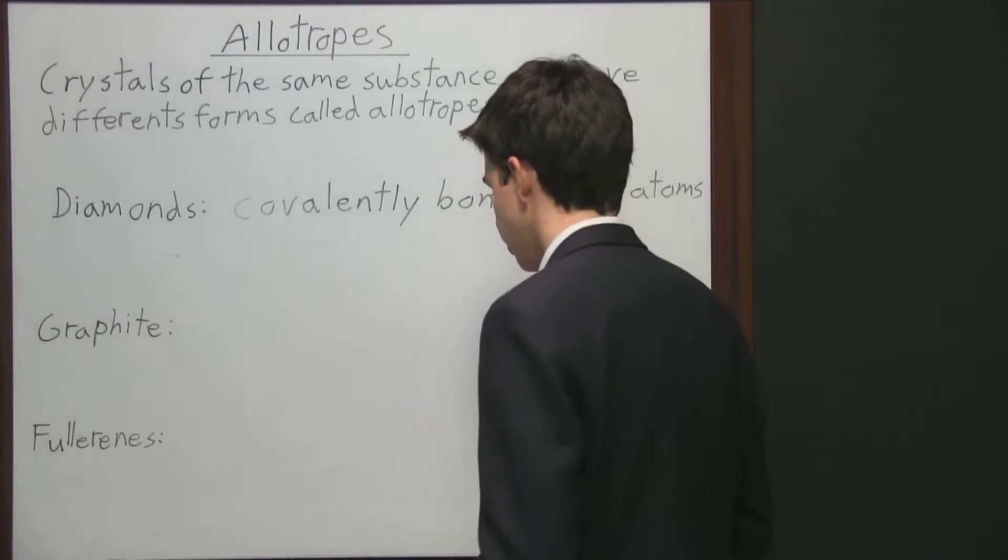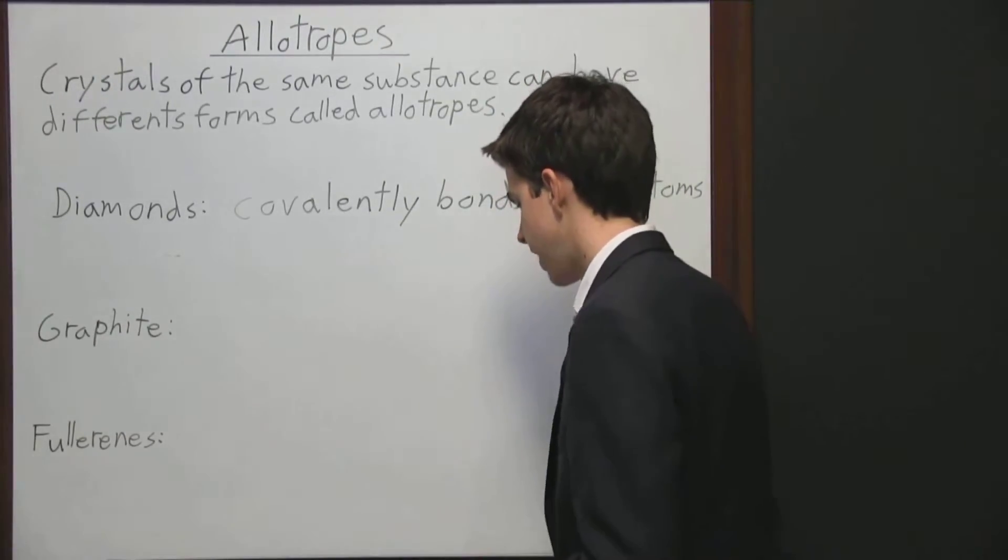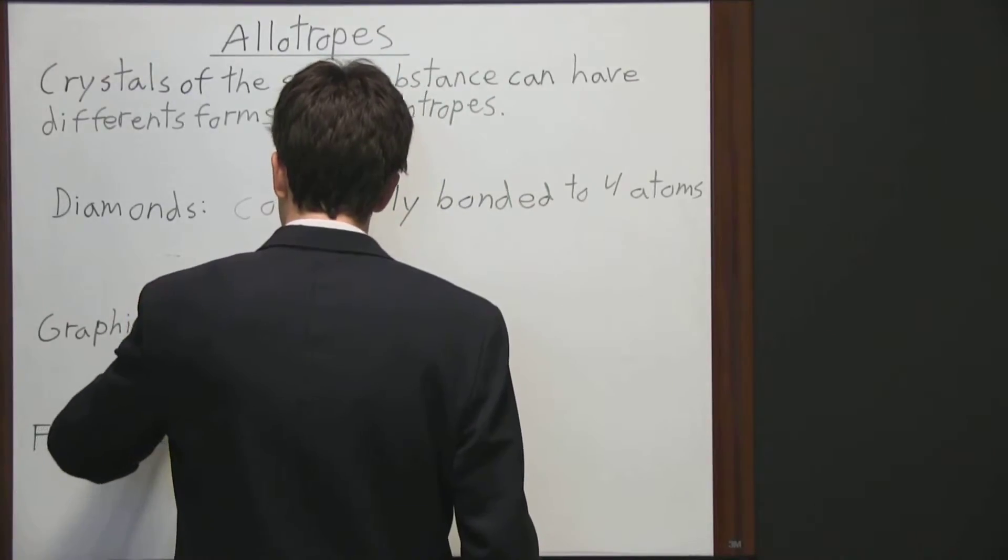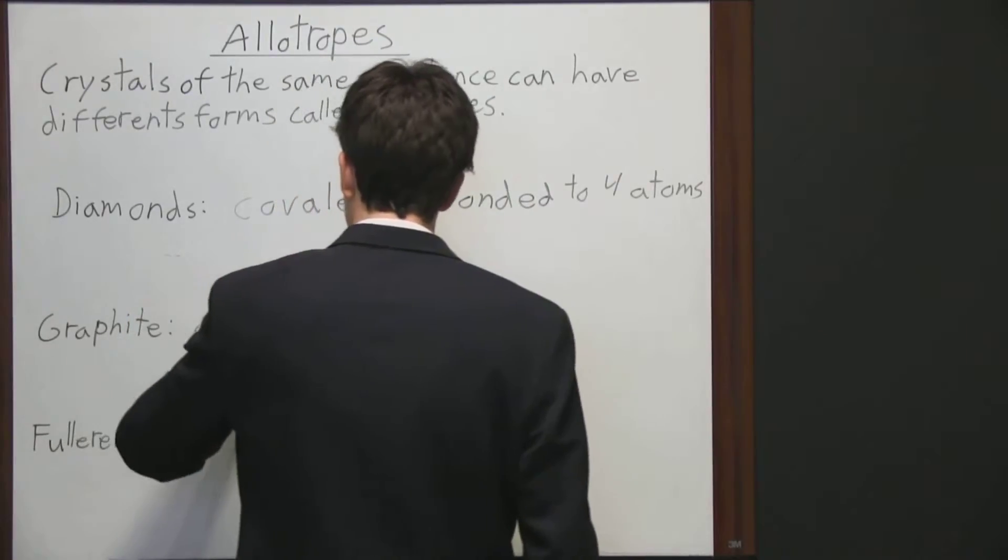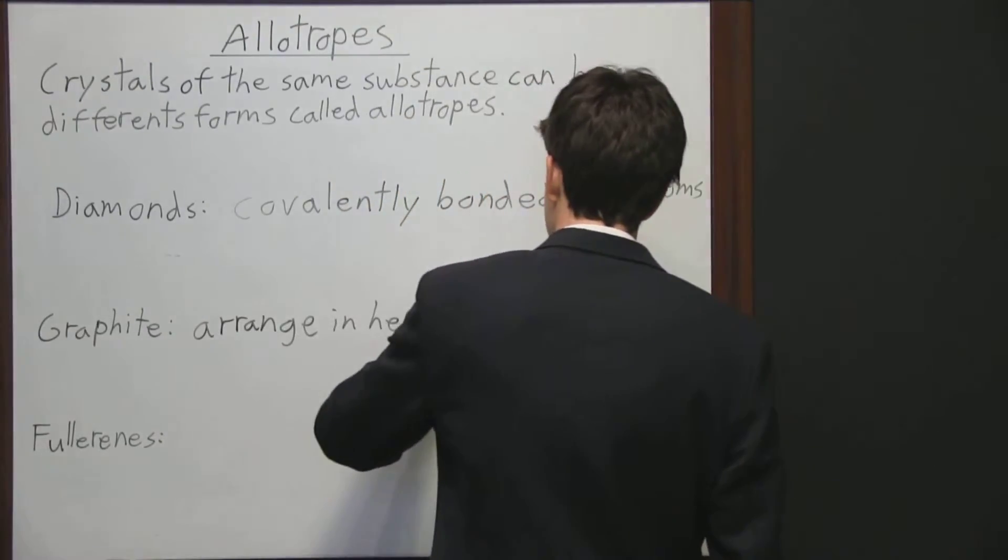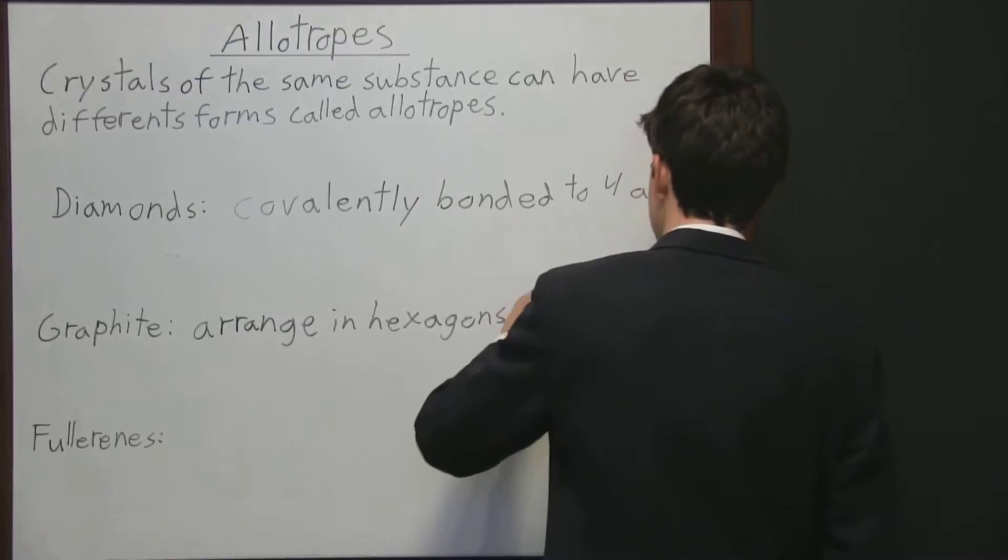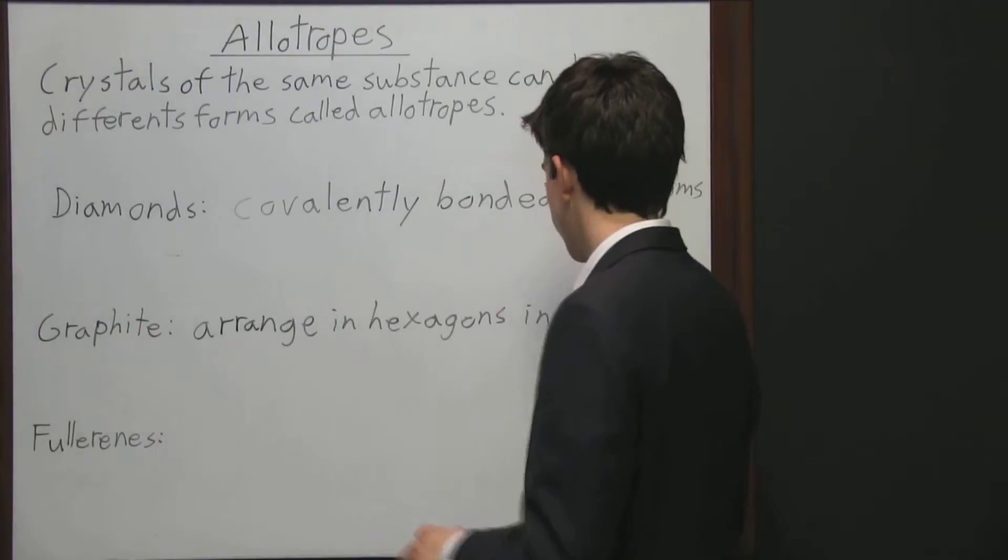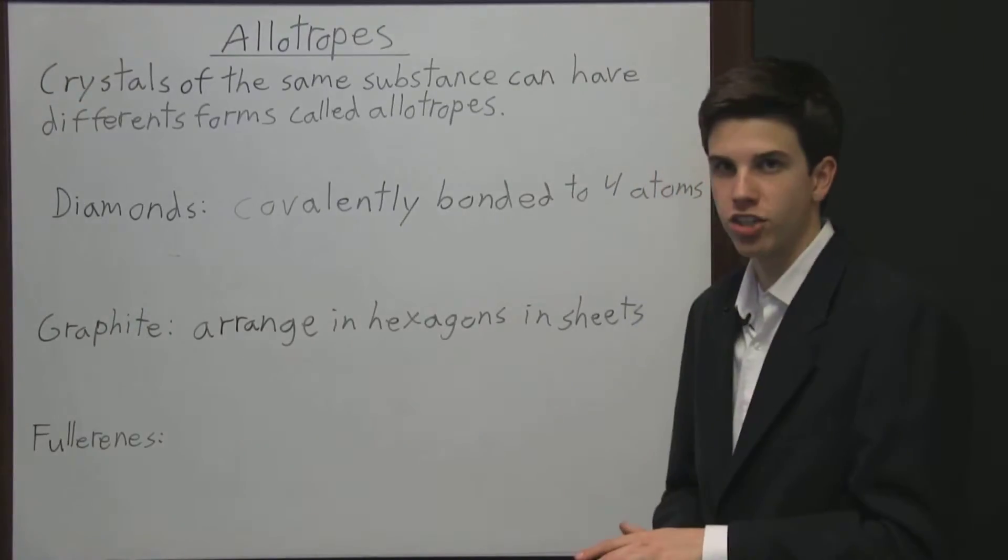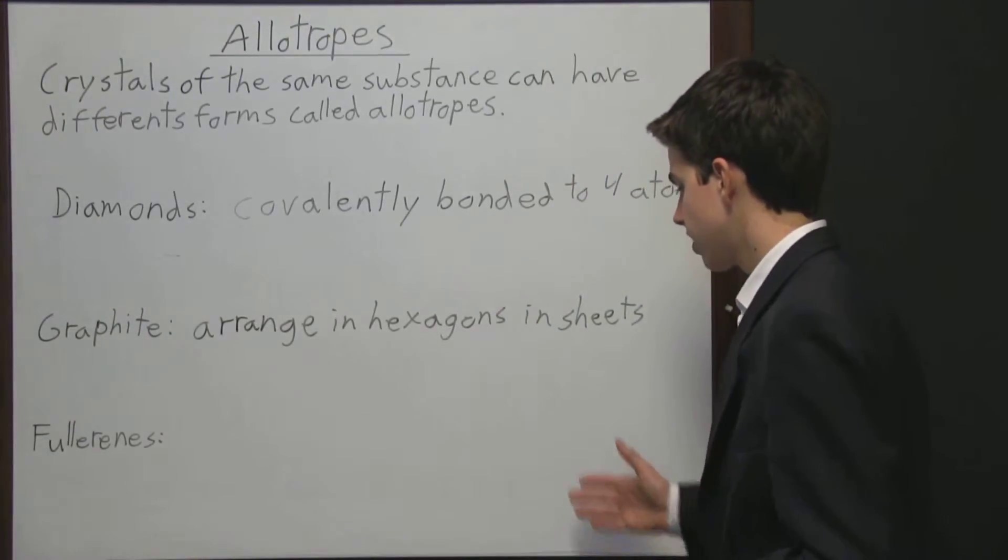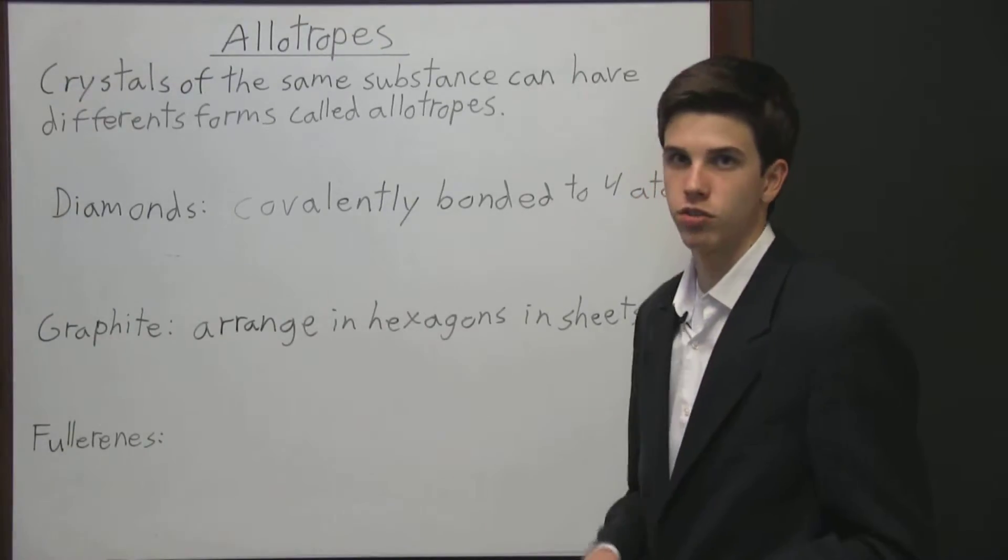Then there's also graphite which is what pencil lead is made out of. And this is when the atoms arrange in hexagons and sheets. So these atoms are arranged in hexagons and these hexagons are arranged in sheets. They can slide back and forth on each other. And this makes something that's very soft and so that's why it's used for graphite.